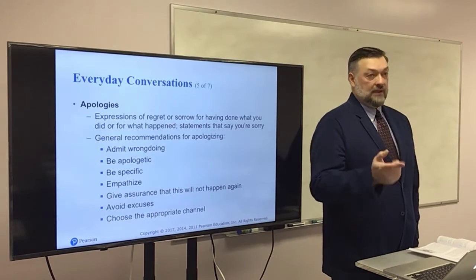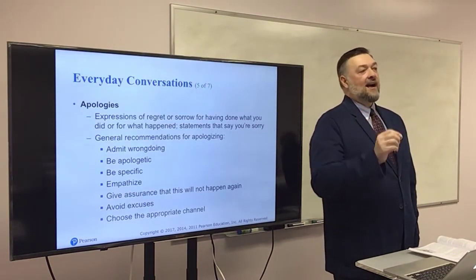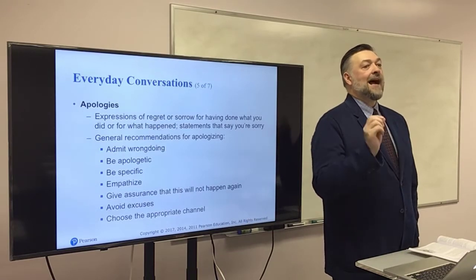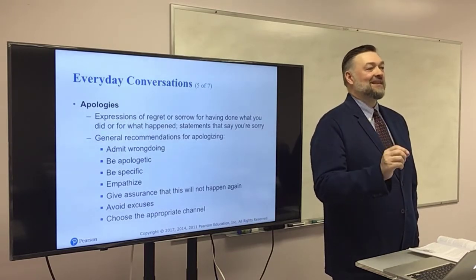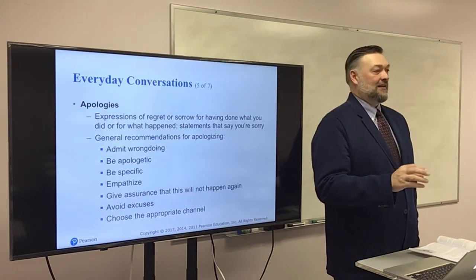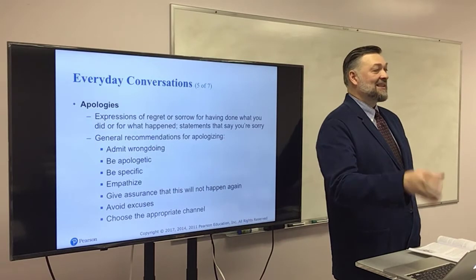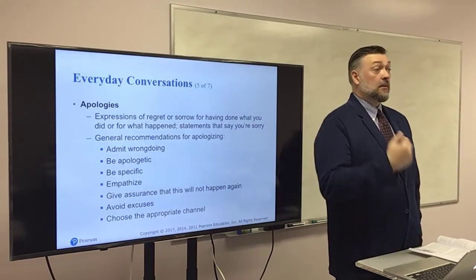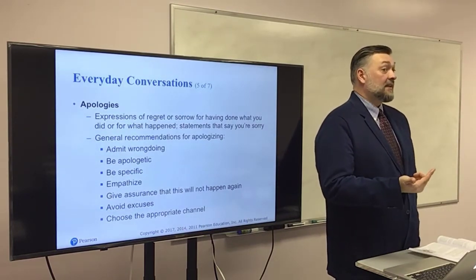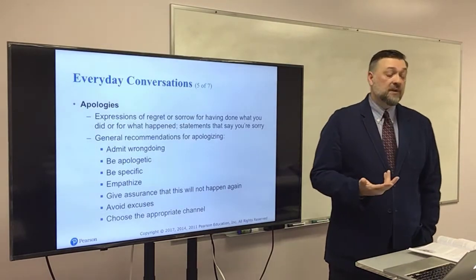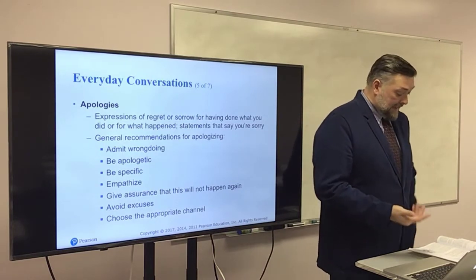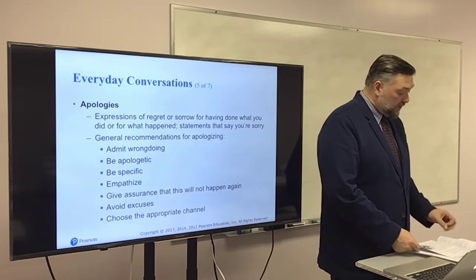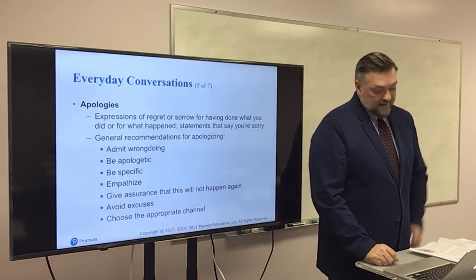An apology needs to be real and genuine. Number one: admit wrongdoing. If you're apologizing for something, say 'I was wrong.' Most of the time, people say 'I'm sorry' but never actually say 'I was wrong' — they can't admit they're wrong. In their world, they're never wrong. They apologize for hurting your feelings but still think they were right. Saying 'I was wrong' is something a lot of people can't do because their personal pride won't allow it. Be apologetic — actually say what you're sorry for, what you've done wrong. That's an important feature.